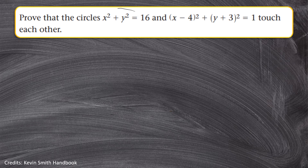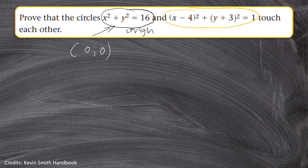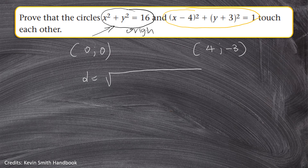Take a look at the first circle: x² + y² = 16. From this standard form, this is a circle with its center at the origin, so the center is (0, 0). The second circle is (x − 4)² + (y + 3)² = 1. We can deduce the coordinates of its center: the center will be (4, −3) — remember, you just change the signs.